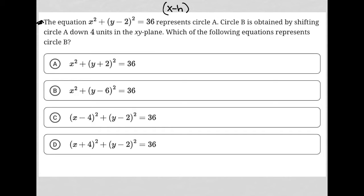It's x minus h squared plus y minus k squared equals r squared, where h and k represent the center of the circle, and r is the radius.